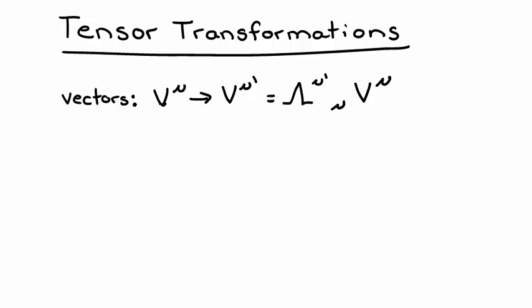So now how do we write the transformation law for a dual vector? We see that by writing out the equation and then filling in the indices as necessary, our transformation rule becomes v lower mu transforms to v lower mu prime via the rule v lower mu prime equals lambda lower mu prime upper mu times v lower mu.